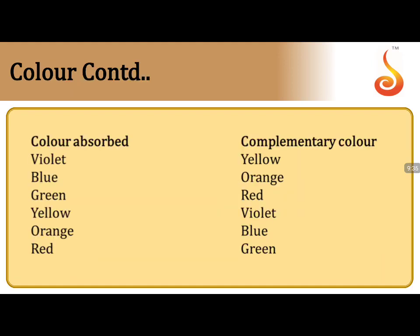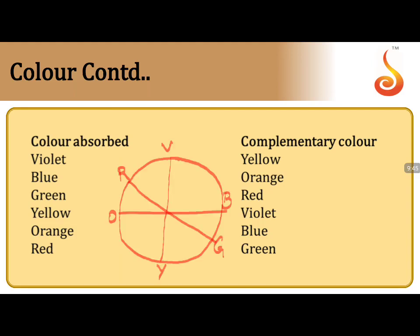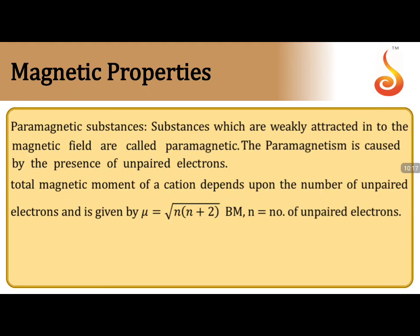The complementary color concept is shown on a color wheel. Violet corresponds to yellow as complementary color; blue corresponds to orange; red corresponds to green; yellow corresponds to violet; orange corresponds to blue. Memorizing the color wheel helps answer such questions easily in examinations.